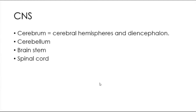The central nervous system includes brain and spinal cord. The brain is divided into three parts: cerebrum, cerebellum, and brain stem. The cerebrum is further divided into two main divisions — the two cerebral hemispheres, which are the two big parts of the cerebrum, and the diencephalon, which forms the internal core of the cerebrum.